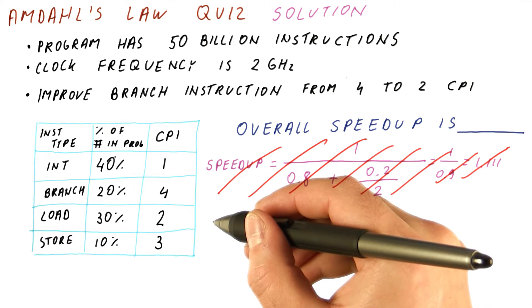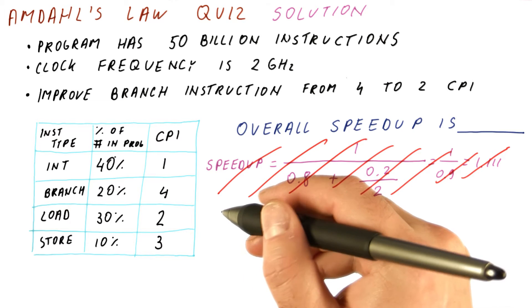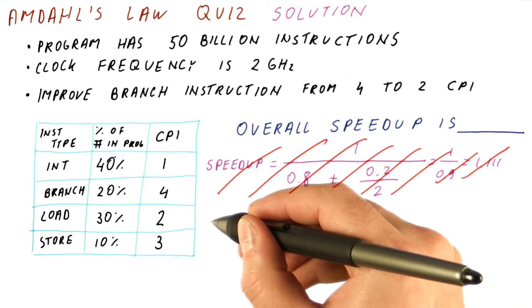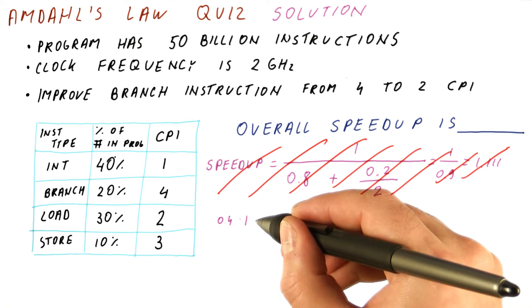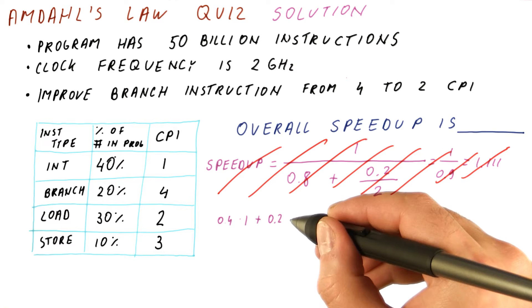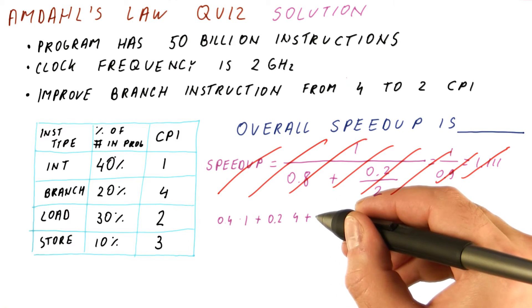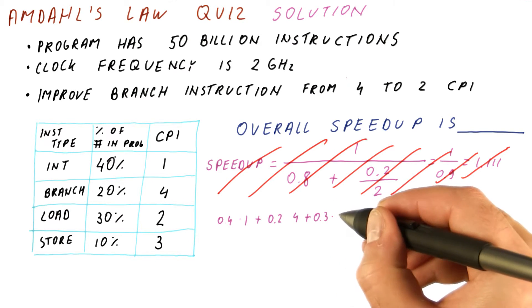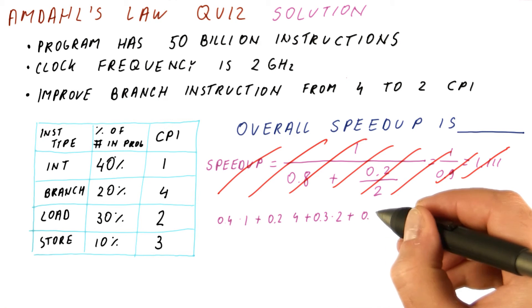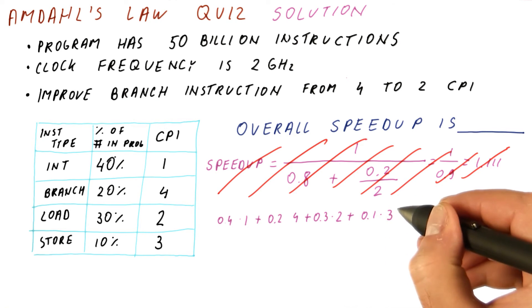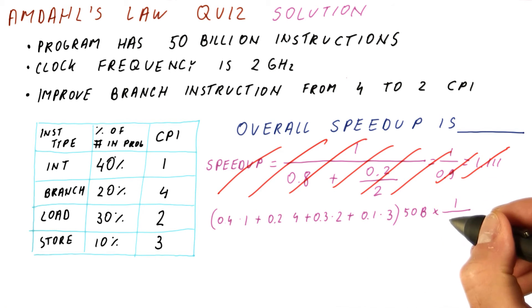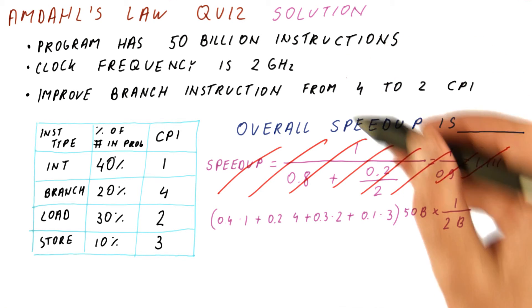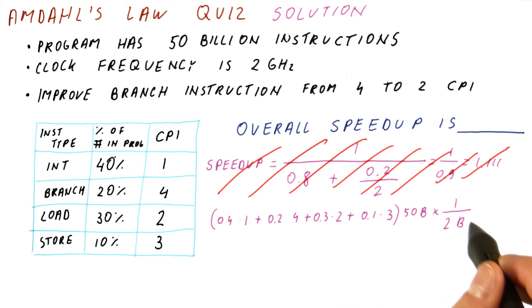So one of the possible correct solutions here is simply to do the following. Using the iron law, we can compute that for 40% of our instructions, we were getting a CPI of 1. For 20% of the instructions, we are getting a CPI of 4. For 30% of the instructions, we are getting a CPI of 2. And for 10% of our instructions, we were getting a CPI of 3. Multiply that by our 50 billion. And multiply that by 1 over 2 billion, which is the 2 gigahertz. So this would be the execution time before the enhancement.